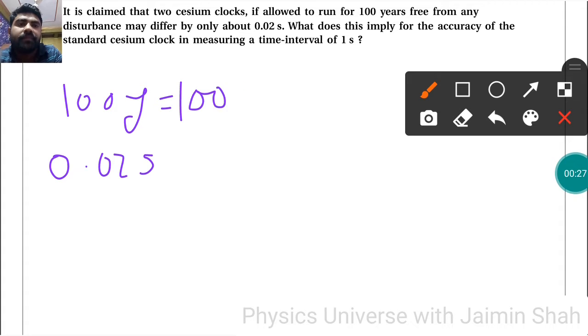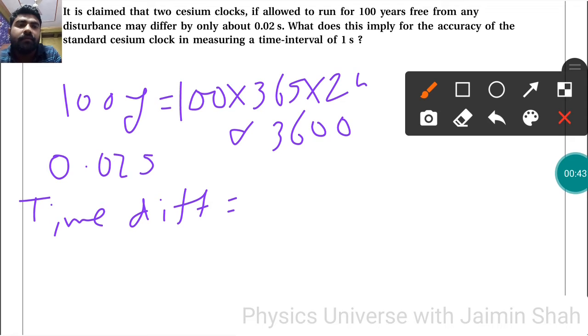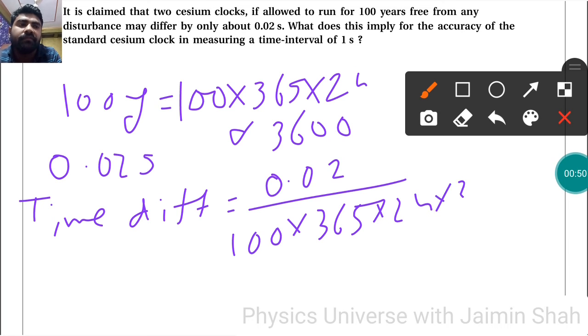100 years equals 100 times 365 days times 24 hours times 3600 seconds. To find the time difference, we calculate 0.02 divided by 100 times 365 times 24 times 3600.